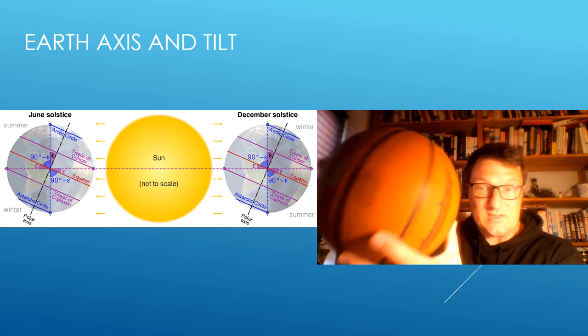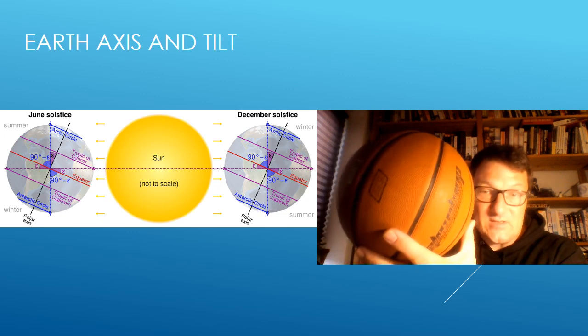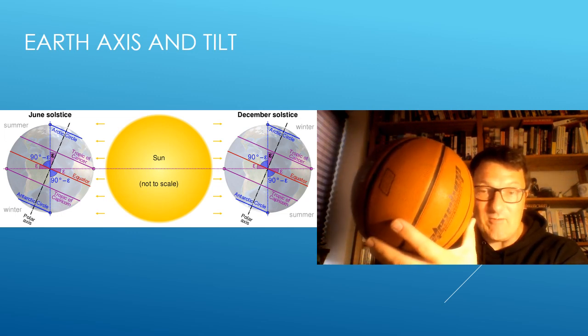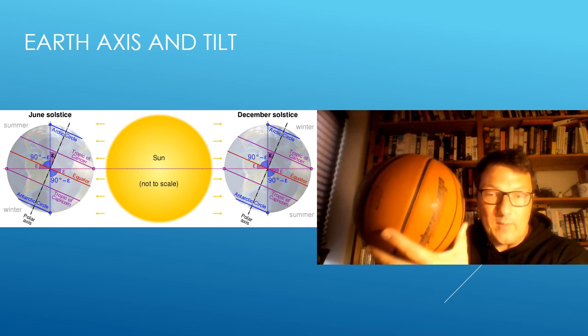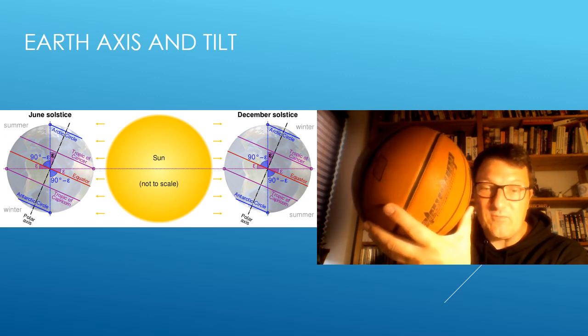This tilt is what makes us have the different seasons, and this is very important for understanding everything from sea currents to sea ice to the effects of global warming. I do apologize for just using a basketball, but that was what I could find at this time.